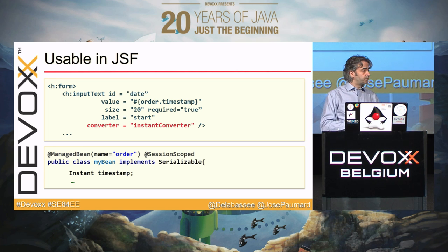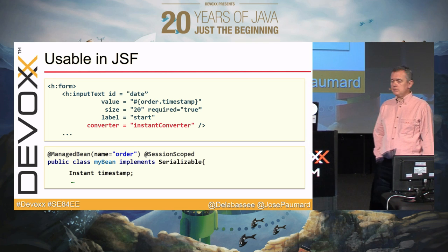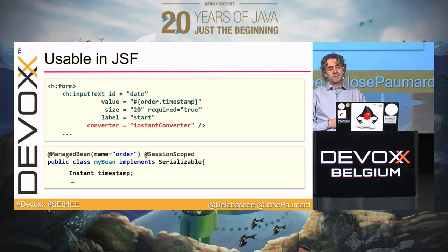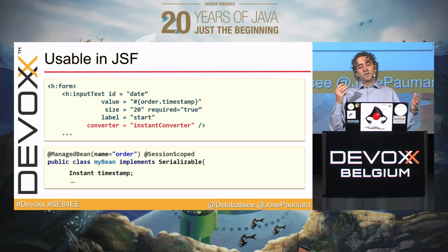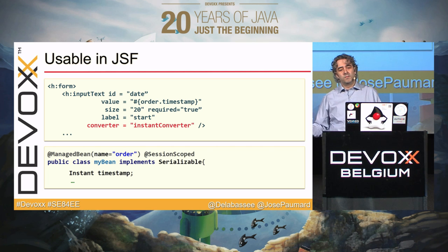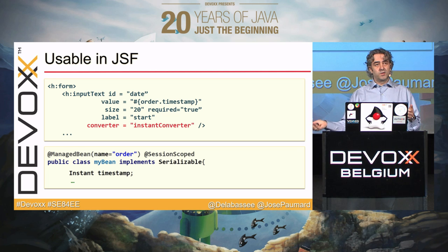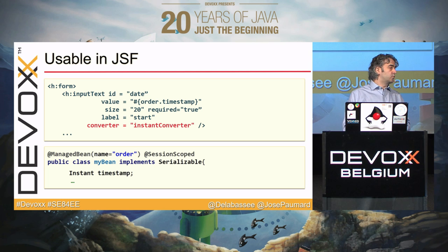Will this be natively supported in the upcoming version of JSF? One of the things being done for Java EE8 — which will only run on top of Java SE8 — is that whenever we update an API in Java EE for Java EE8, we look at whether it makes sense to support new SE8 capabilities. In this case, it would make sense.